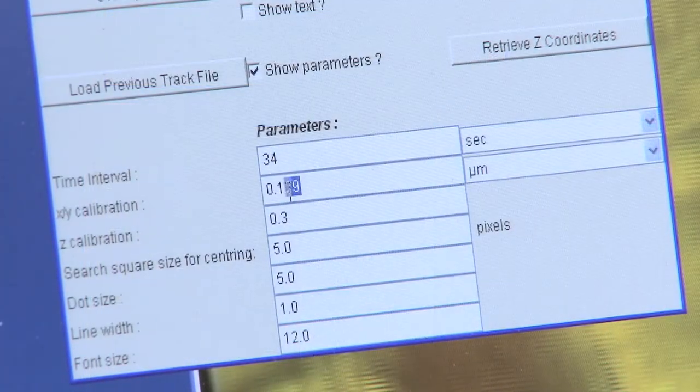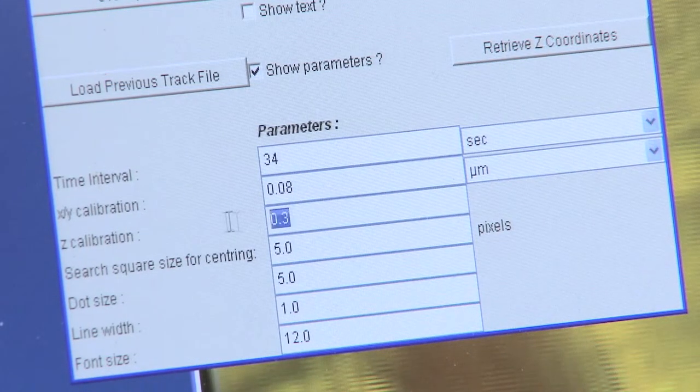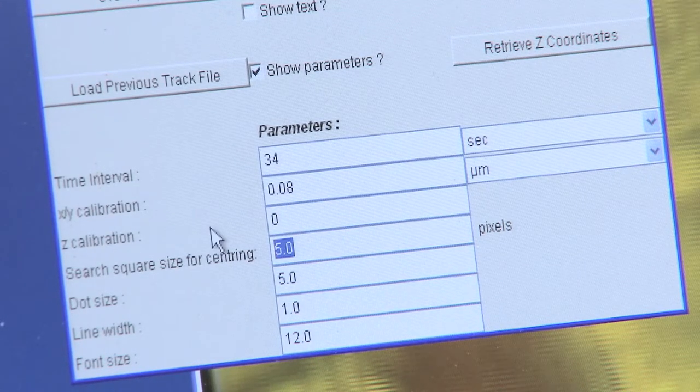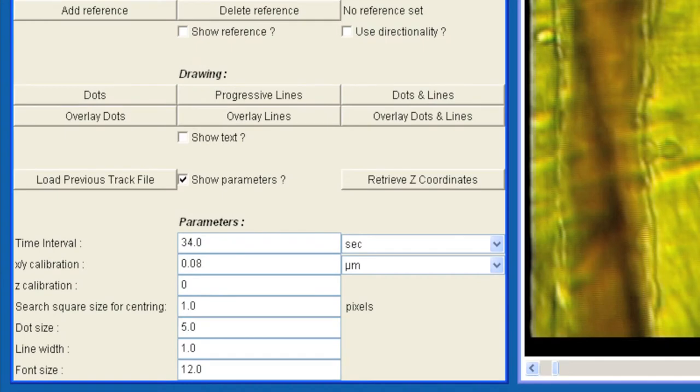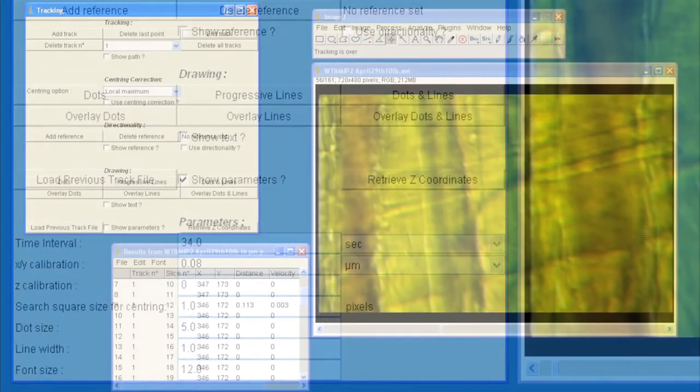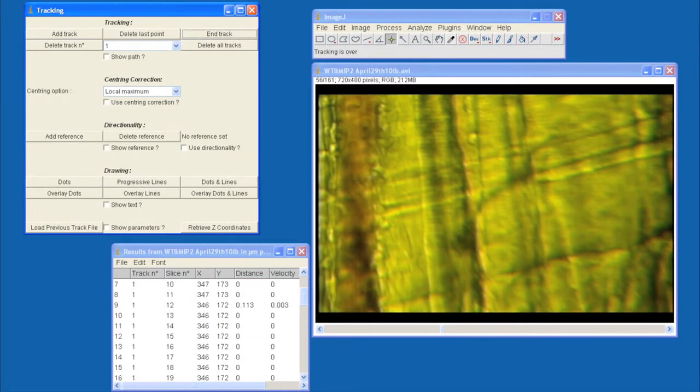Fill in the relevant information into the fields at the bottom of the screen before starting tracking. The following parameters should be determined before tracking. Time interval in seconds is the full time-lapse divided by 30. XY calibration is the micrometer per pixel measurement from the calibration of the image of the micrometer. Z calibration is set at 0. Search square size for centering equals 1. It is necessary to select, in the recorded video, a stable and clear point as a reference point. This reference point can be any clear and small structural point that remains unchanged and stable throughout the whole experiment. Click Add Track to track the reference point from the first to the last frame, then click End Track.